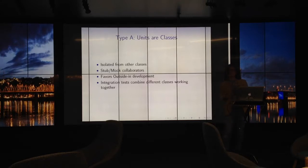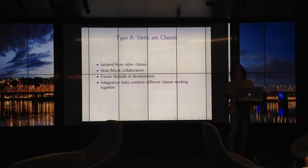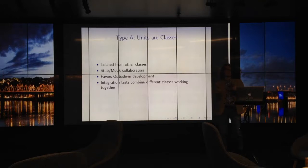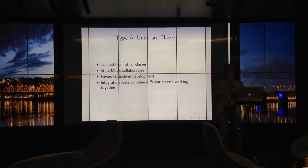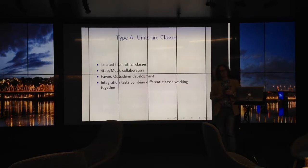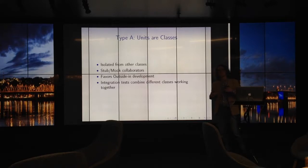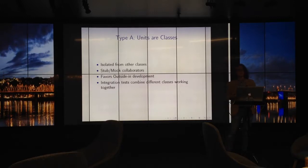Type A tends to favor what we call outside-in development. Basically, we start developing a feature at the user interface layer while our system is composed of layers, and we stub out the implementation of things we depend upon as we go, gradually working our way down. By contrast, integration tests to Type A means basically combining different classes and testing them as they work together — to ensure we haven't made any glaring errors in our assumptions about our test doubles.